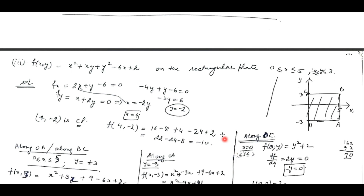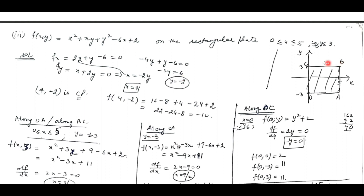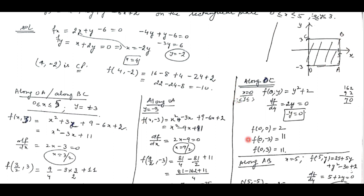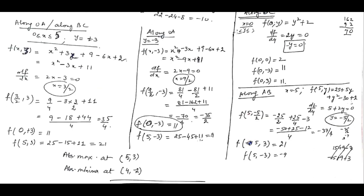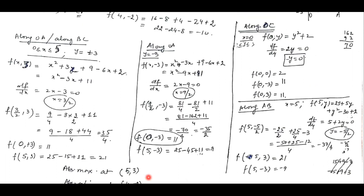Similarly we can do question number 3, where we are having a rectangular plate. Over this region we find out the absolute maxima and minima using the same procedure. We find the partial derivatives, put them to 0 to get a critical point, then check along all boundary lines OA, AB, BC, and CO. Along OA the value of y is -3 and x varies from 0 to 5. Along AB, x is fixed at 5 and y varies from -3 to 3. After calculating all critical and endpoint values, the absolute maxima exists at (0.5, 3) with value 21, and the absolute minima exists at (4, -2) with value -10.